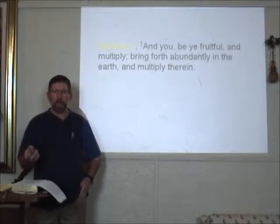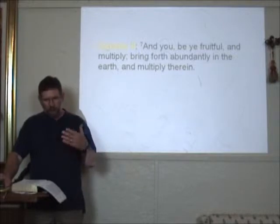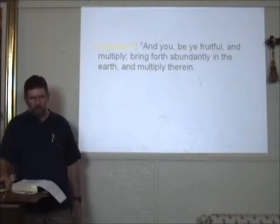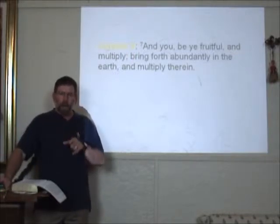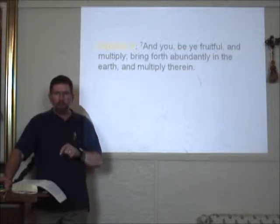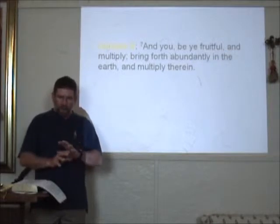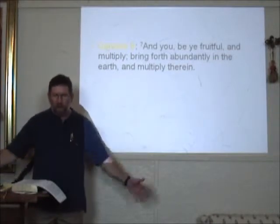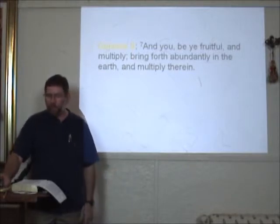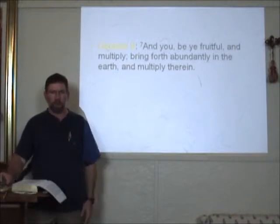He tells them again — mainly Noah's sons, since Noah never had any more children after this point — 'Be fruitful and multiply, bring forth abundantly in the earth and multiply therein.' Here's another reminder of their standing orders: they are supposed to spread over all the earth, populate it, multiply, and live in the earth. God created the earth for people to live in — that's what He meant for them to do.